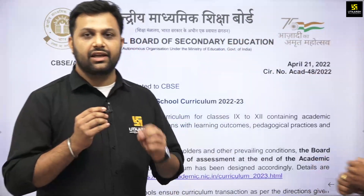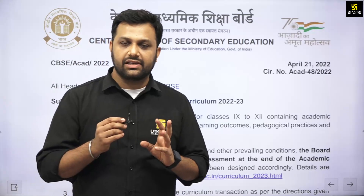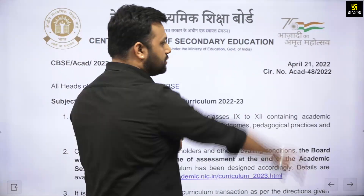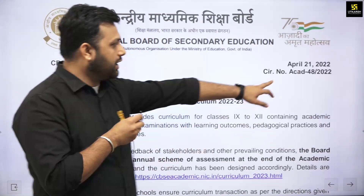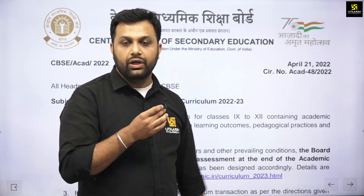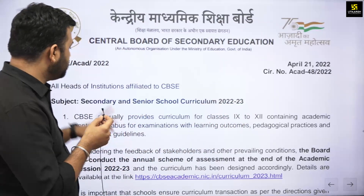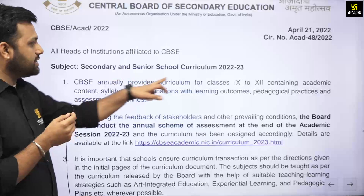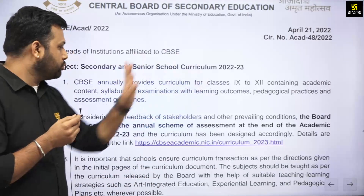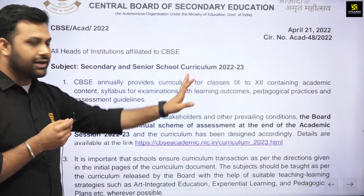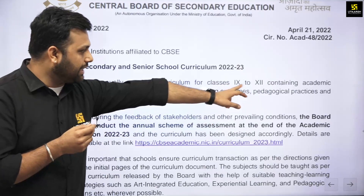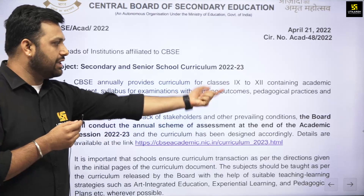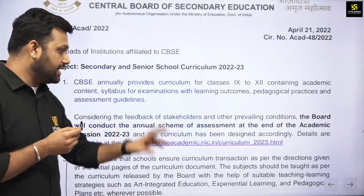So students, CBSE has released its curriculum. The circular date is April 21, 2022, and the circular number is ACAD 48, 2022. The subject is secondary and senior secondary curriculum 2022-23. CBSE annually provides curriculum for classes 9th to 12th, containing academic content, syllabus for examinations, learning outcomes, and more.